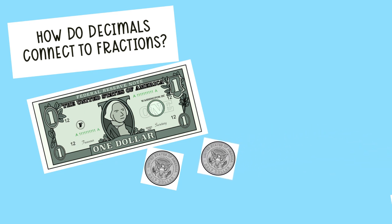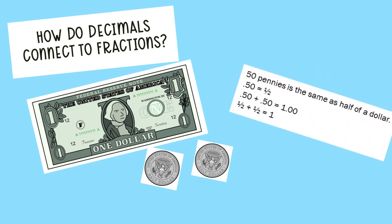If we have two half dollars, we have one dollar. So 50 hundredths and 50 hundredths equals our whole. We could say 50 pennies is the same as half of a dollar. 50 hundredths or 50 cents is the same as one half. 50 hundredths plus 50 hundredths equals one whole.